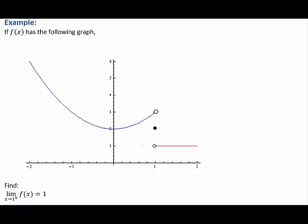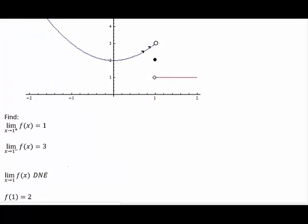From the right, the function looks like it's going to go towards the point y equals 1. From the left, on the other hand, the function looks like it's going to go towards y equals 3. But what value does the function have?